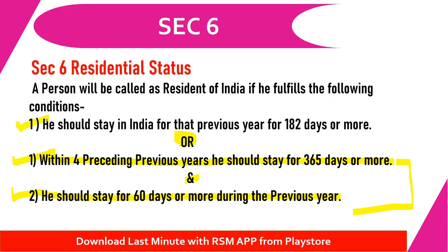If the first condition itself is satisfied — meaning if he stays 182 days or more in India in the previous year — then there is no need to check the second condition at all. So we have now read the rules: a person can become a resident of India if he satisfies these conditions, as per Section 6.